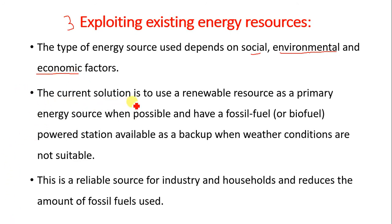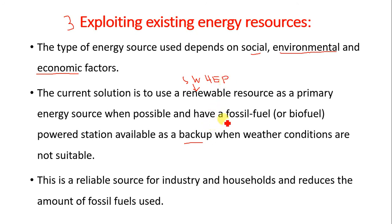The current solution is to use a renewable resource as a primary energy source when possible, and have a fossil fuel power station available as a backup in case there is an issue with the renewable source. Renewable sources such as solar, wind, and hydroelectric power should be in place. Fossil fuels and radioactive energy such as uranium should serve as backup, as they have adverse effects on the environment.